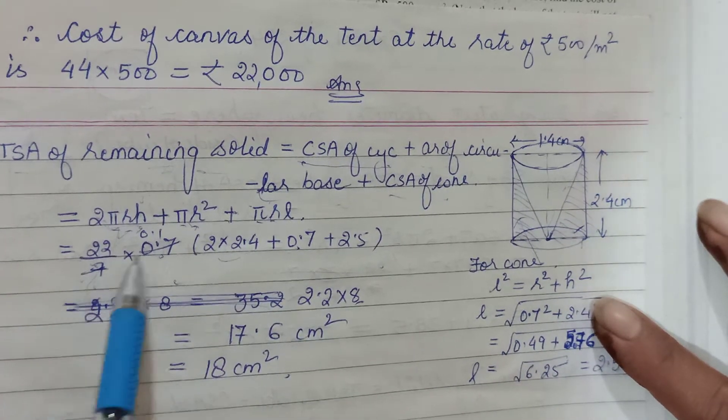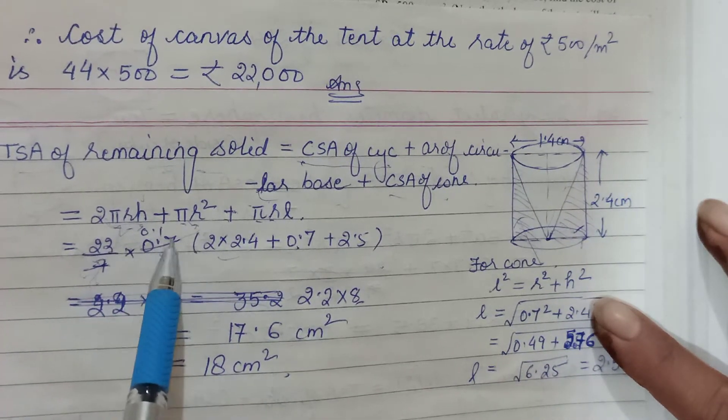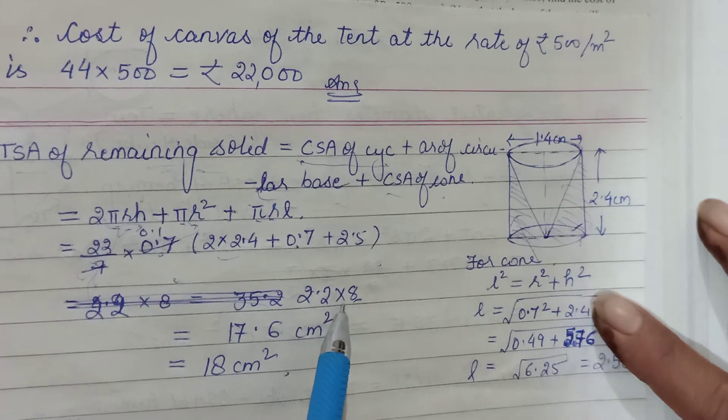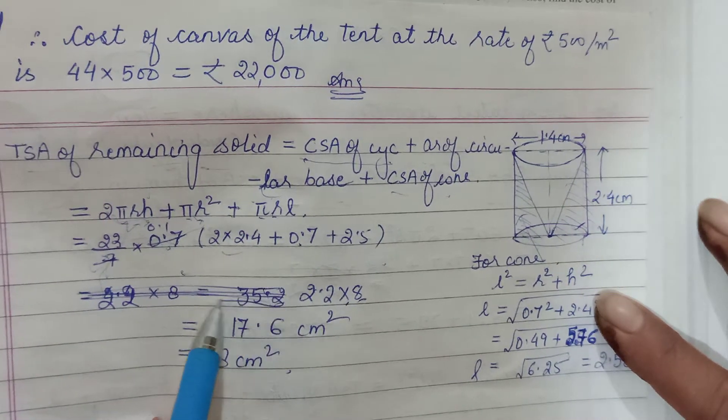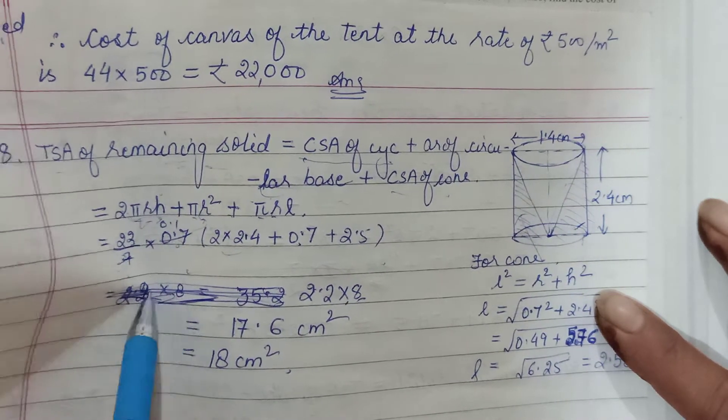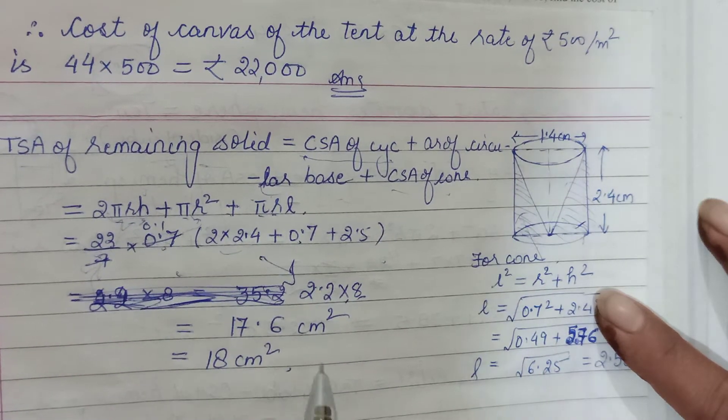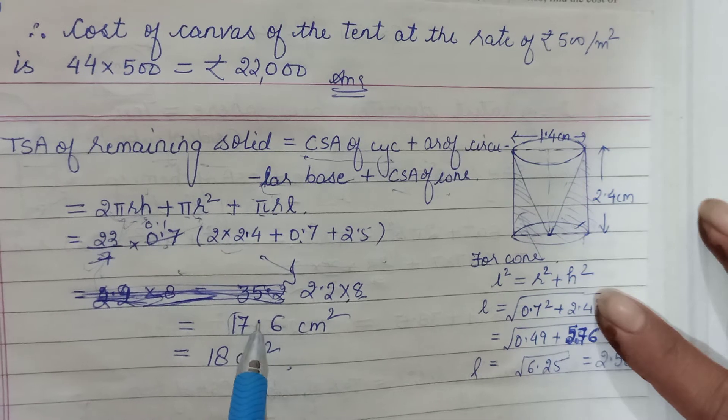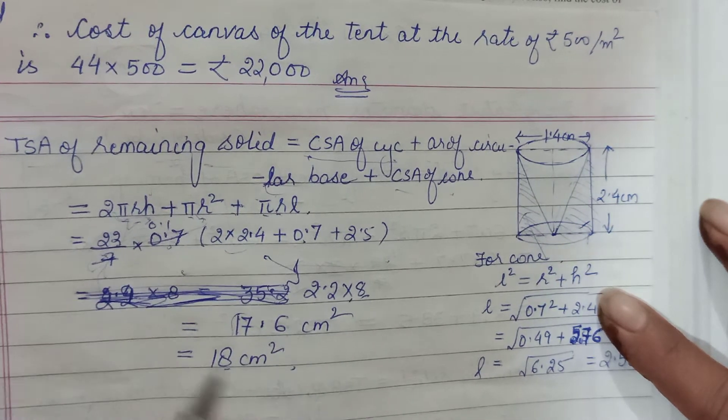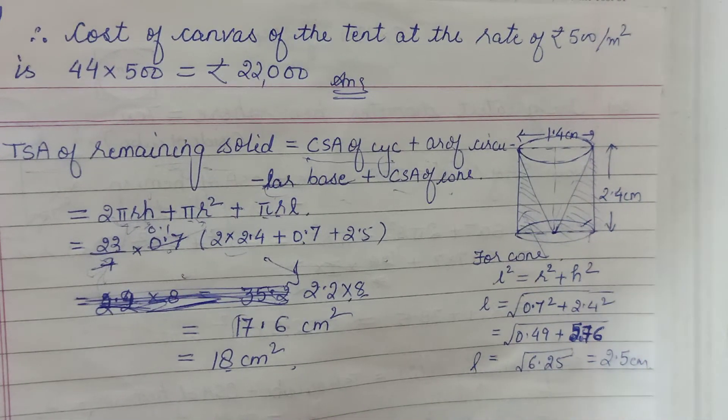This is coming as 8, and this and this is getting cancelled. So 22 into 0.1 becomes 2.2. I had made a certain calculation mistake here, so please overlook this. And then multiplying you get - he said approximately - so you will round it off. 17.6, you would say it would be approximately 18.